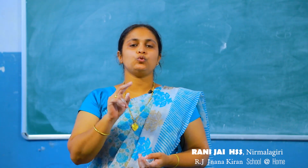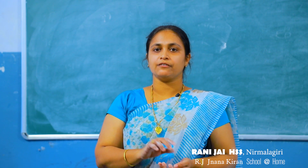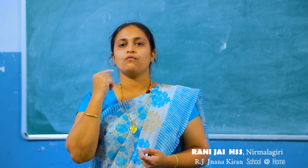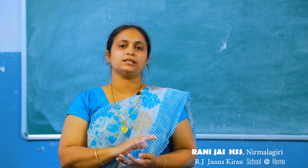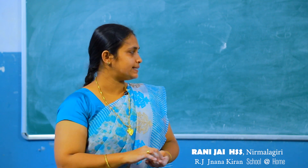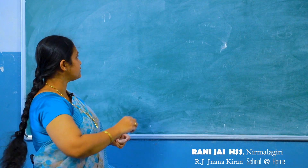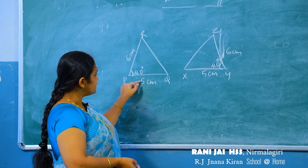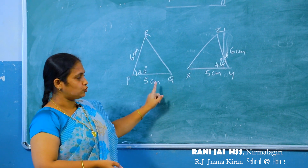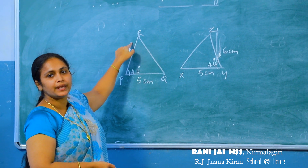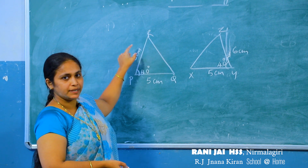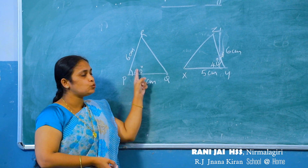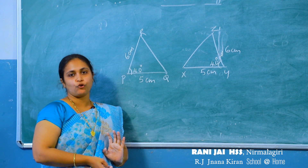Now we consider two sides and one angle. Given a triangle with two sides and one angle, how do we find the other sides and angles? Consider two triangles where the sides PQ equal to 5 centimeter and PR equal to 6 centimeter, and the angle between these two sides is 40 degrees.